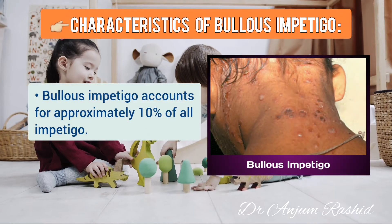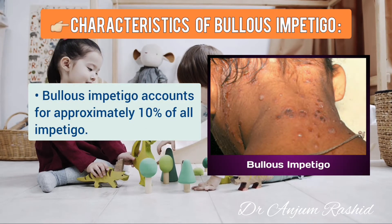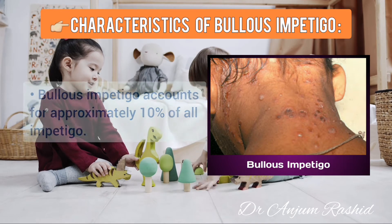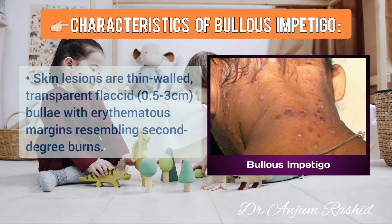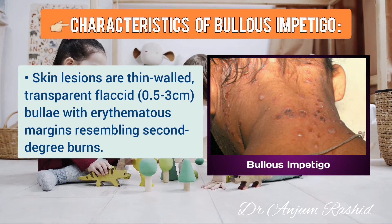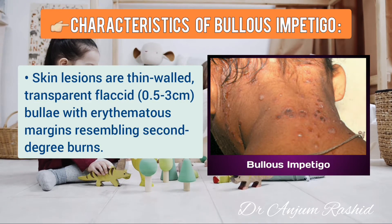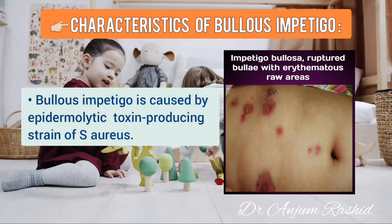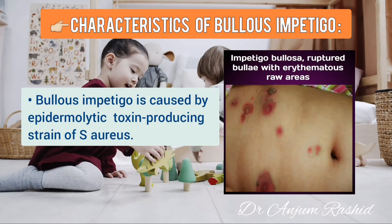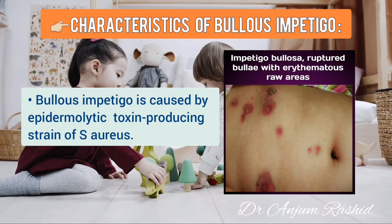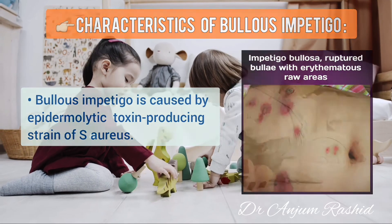The second type is bullous impetigo, which accounts for approximately 10% of all impetigo cases. These skin lesions are thin-walled, transparent, flaccid bullae with erythematous margins resembling second-degree burns. Bullous impetigo is associated with an epidermolytic toxin-producing strain of Staphylococcus aureus.